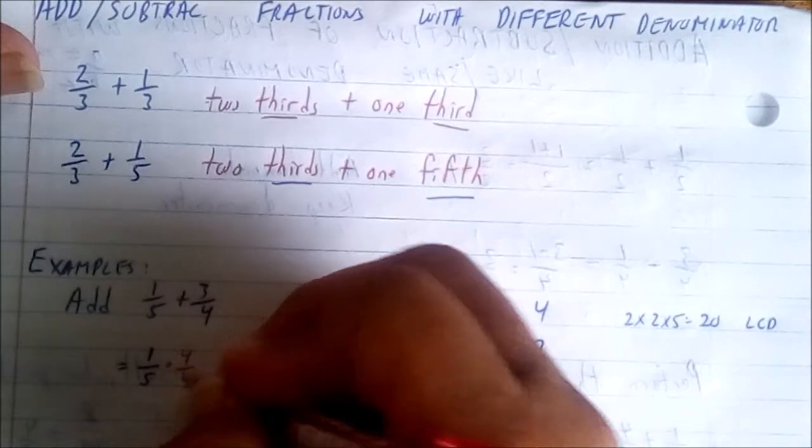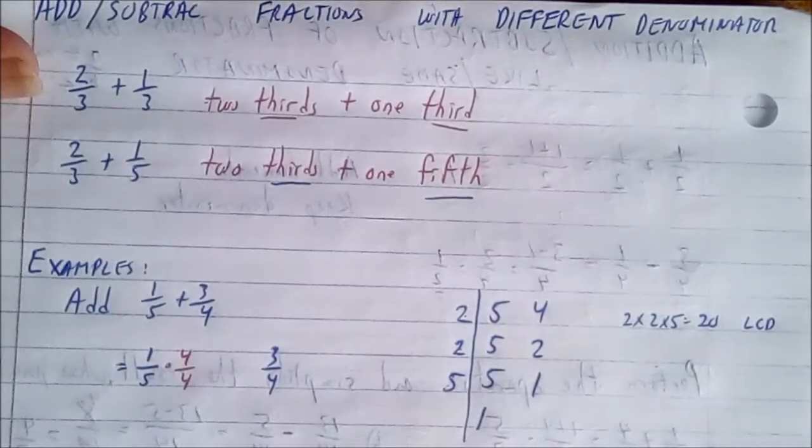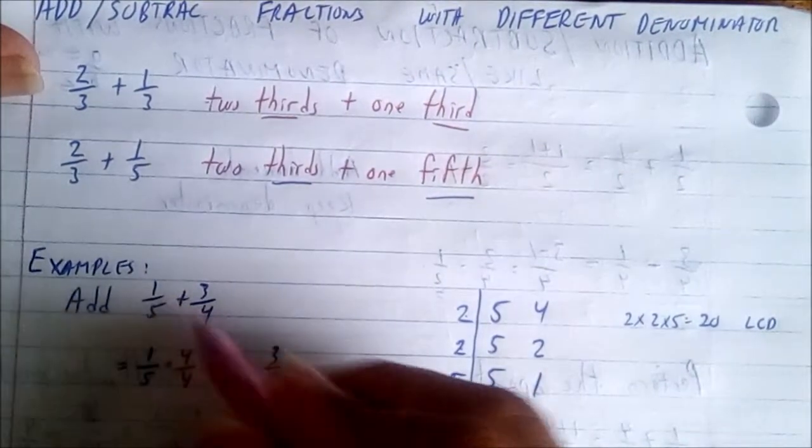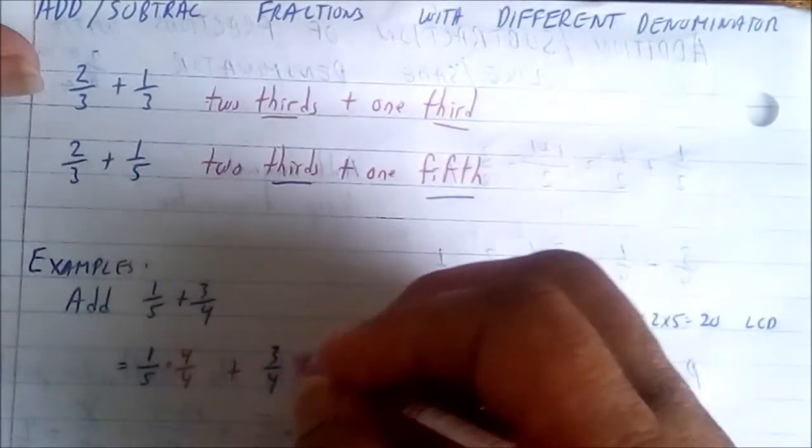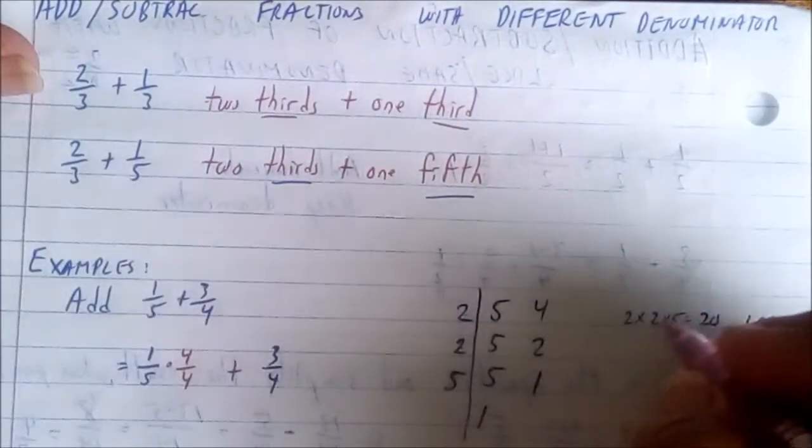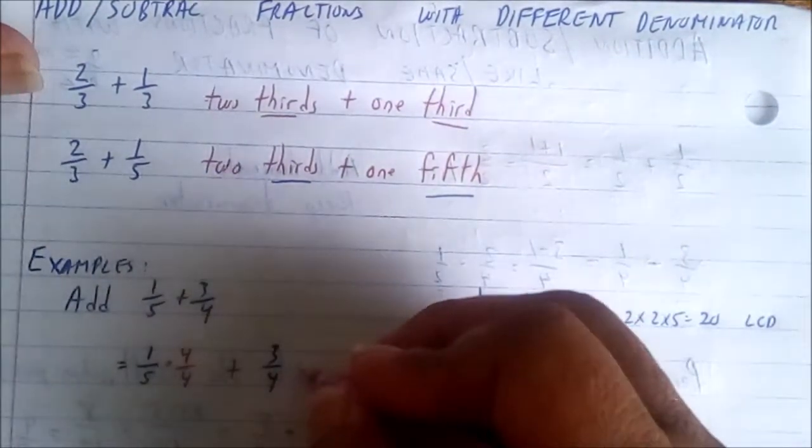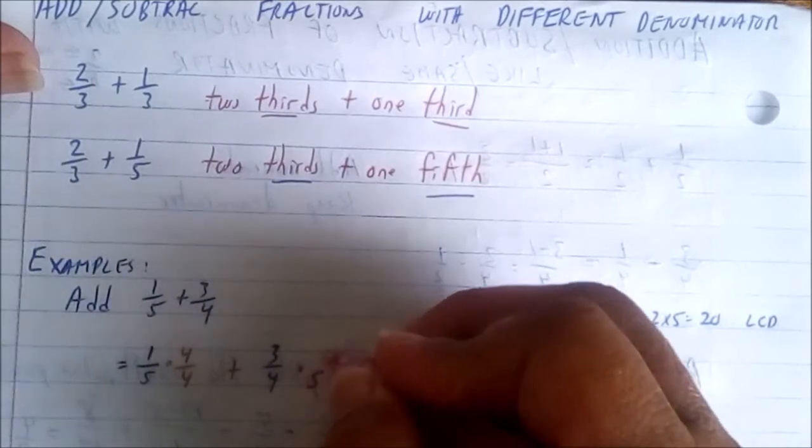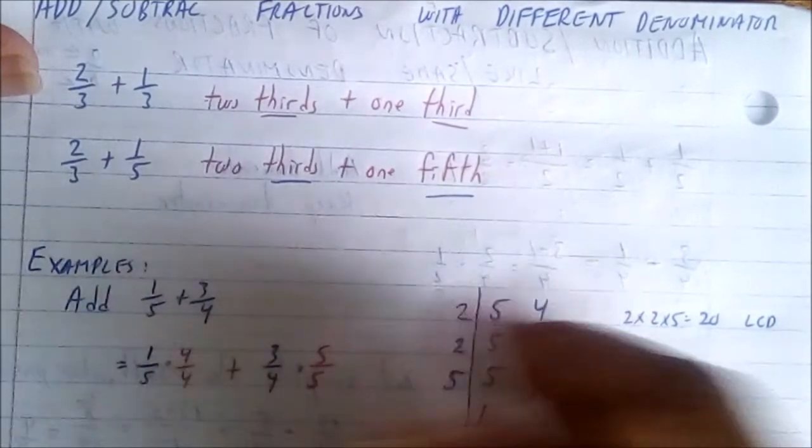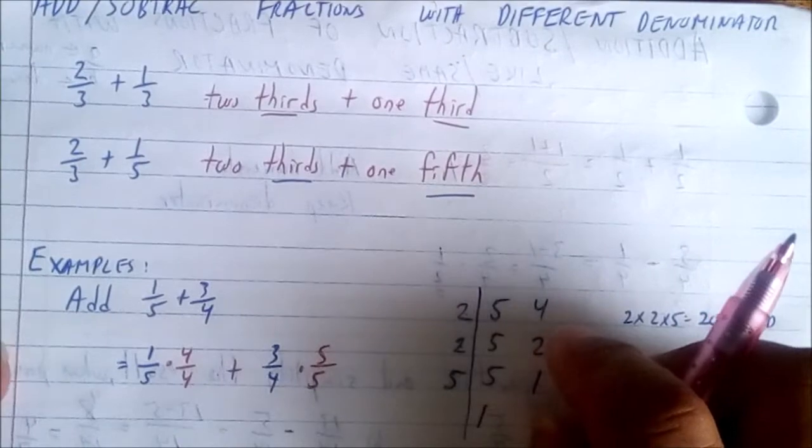In other words, I'm simply multiplying by the value of one. Bring down this sign here, and then we multiply this four by a value to get twenty. Four times five will give us twenty, so we multiply at the bottom by five as well, five at the top.